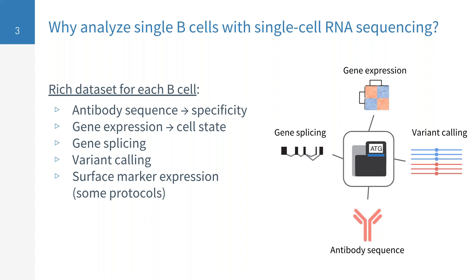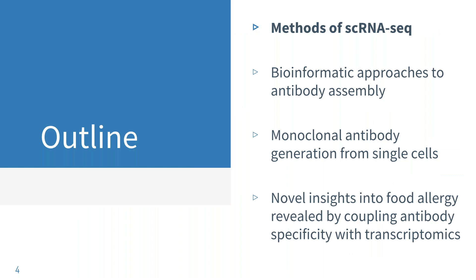In addition, you also get splicing information within each of these genes. For B cells, you can see whether there is membrane exon splicing of the antibody transcript. You can also do variant calling from single cell RNA-seq data and get information on monoallelic or biallelic expression and even do haplotype phasing. Lastly, with some methods of single cell RNA-seq, you're also able to couple information on surface marker expression, for example if you use flow cytometry.